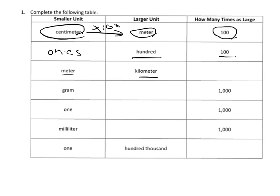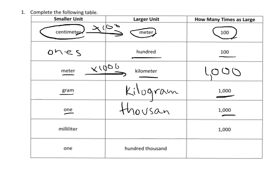You've got meters and kilometers. How are they connected? Well, a kilometer is 1,000 times larger than a meter. So we've got 1,000 right here. And now we've got a gram as our smaller unit, and we're looking for something that's 1,000 times bigger than a gram. That's the kilogram. And then we have a one and something that's 1,000 times larger than a one, that's 1,000. And then we've got a milliliter, and something that's 1,000 times bigger than a milliliter, that's the liter. And then we have a one and 100,000, and how many times as large as that? That's 100,000 times larger.